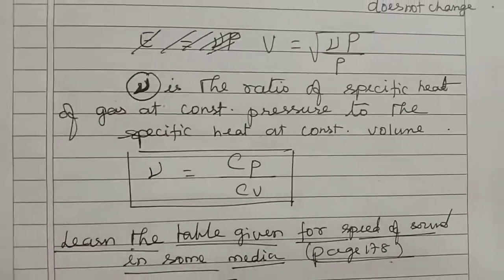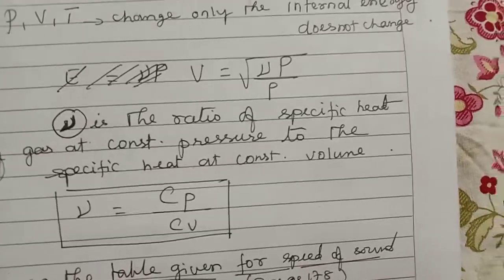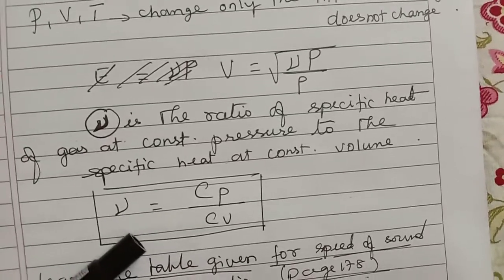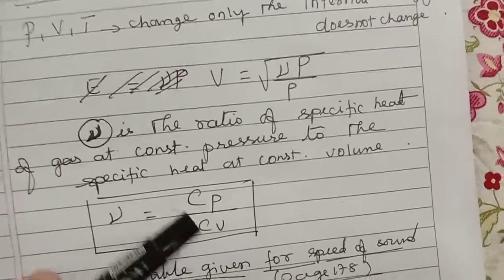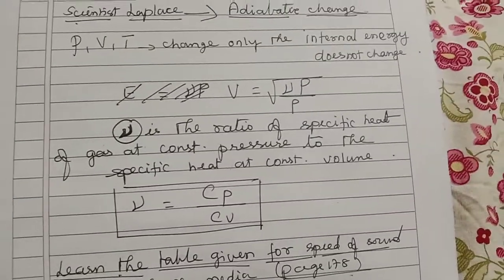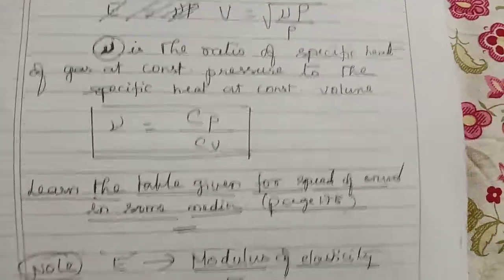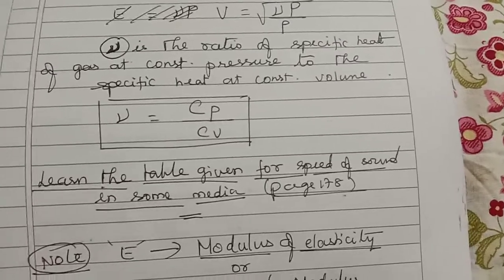Children, don't worry. Specific heat concepts will be learned in 10th standard. Now you have to learn only the formula. So the constant symbol you can learn as CP by CV. After learning all three formulas, better learn the table given for the speed of sound in some media, which is on page 178.